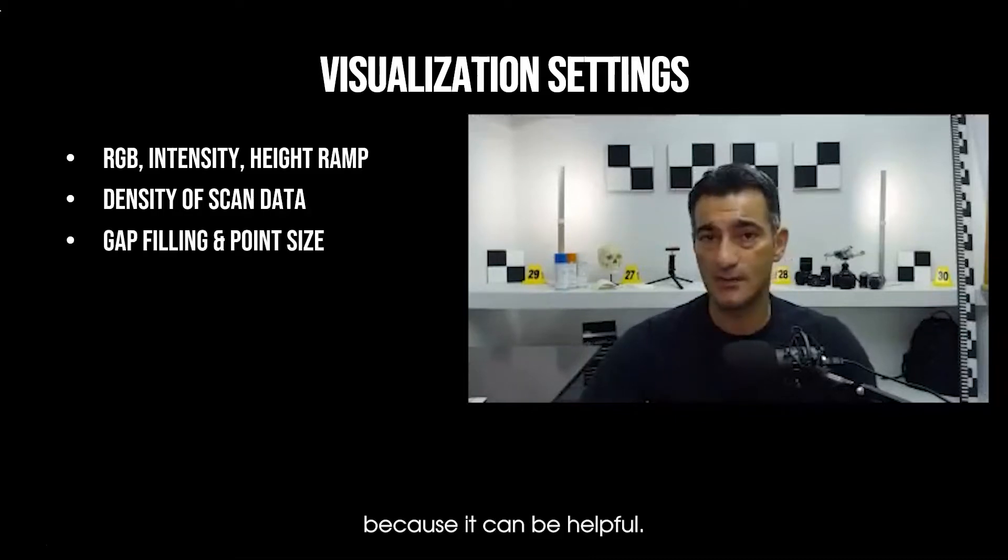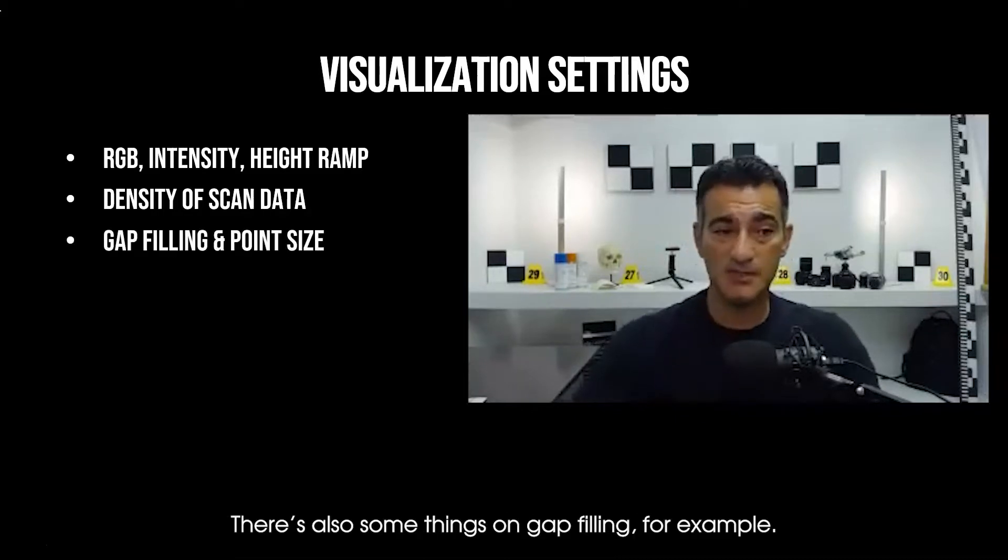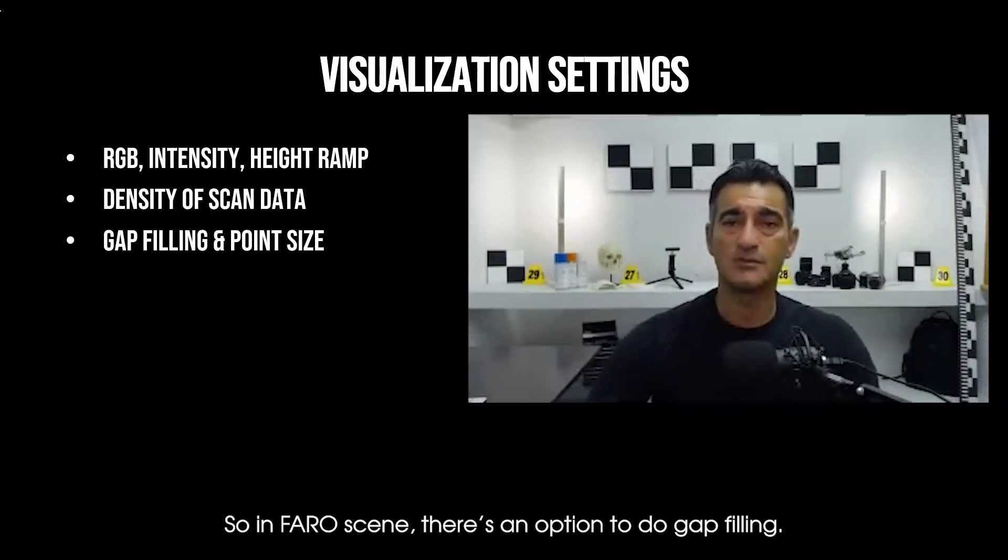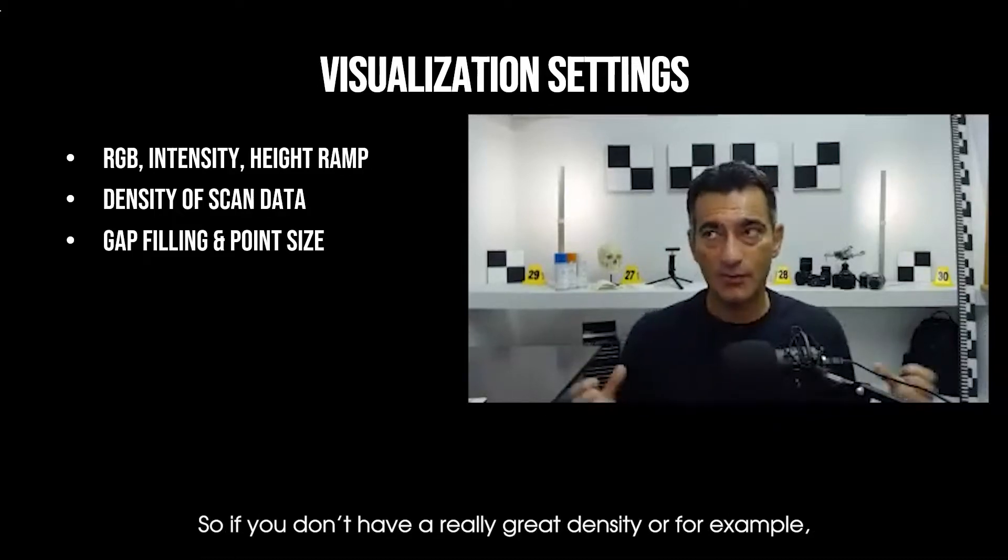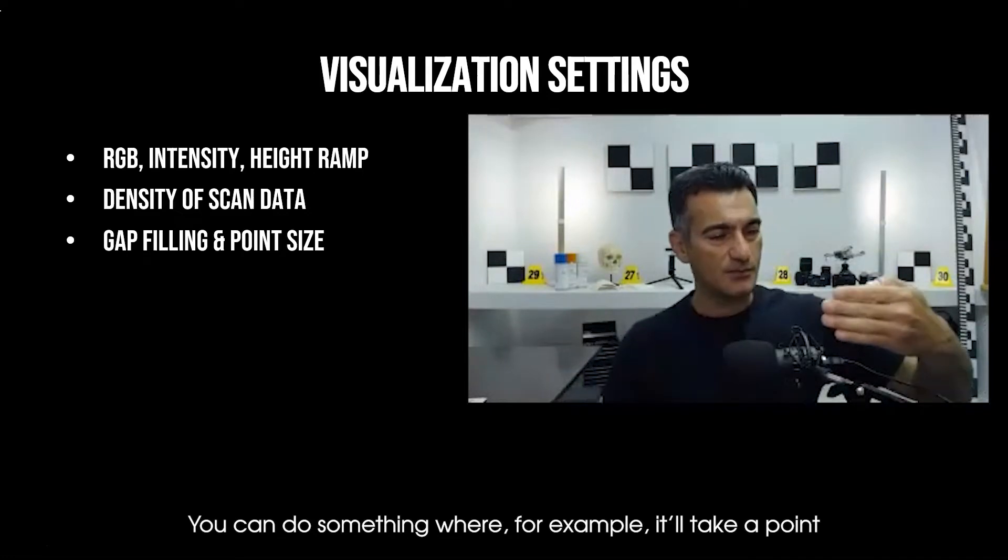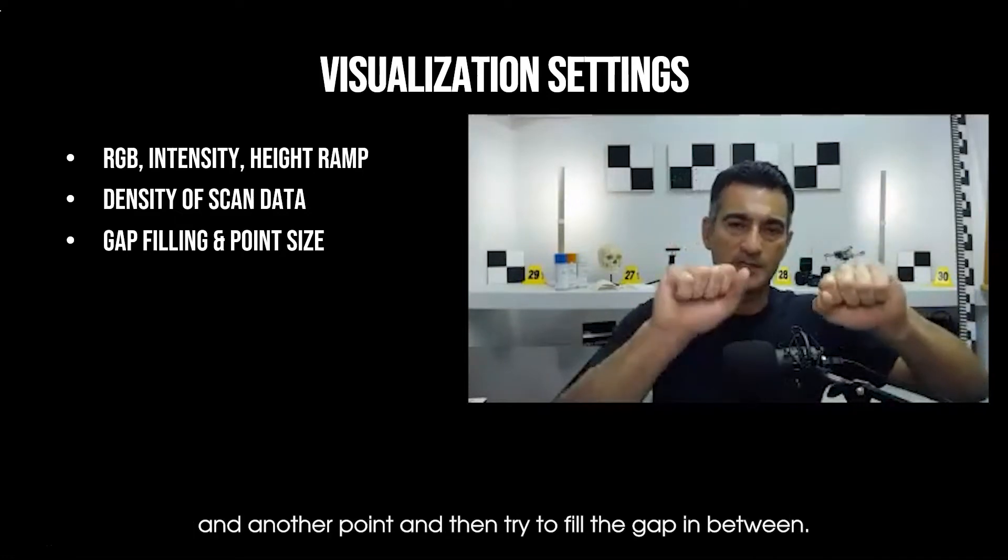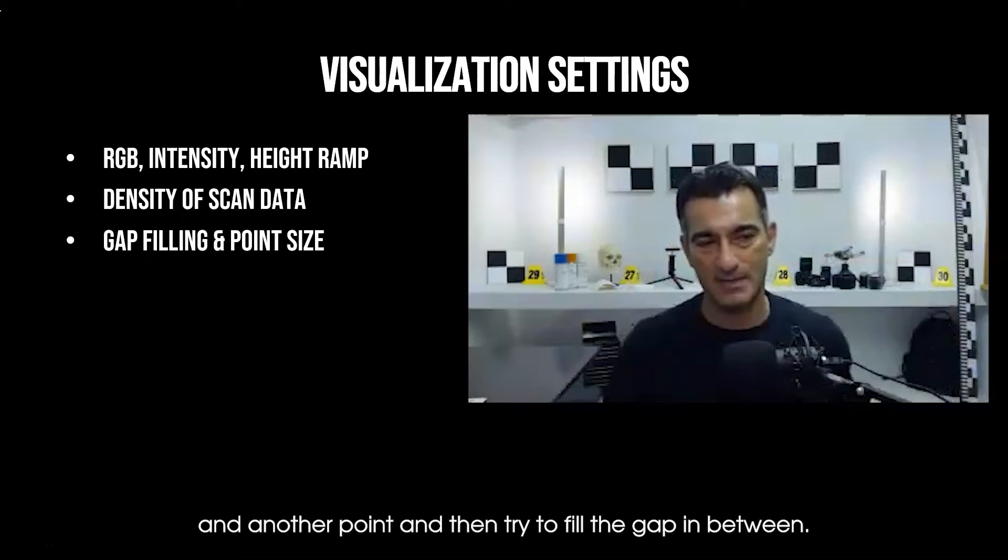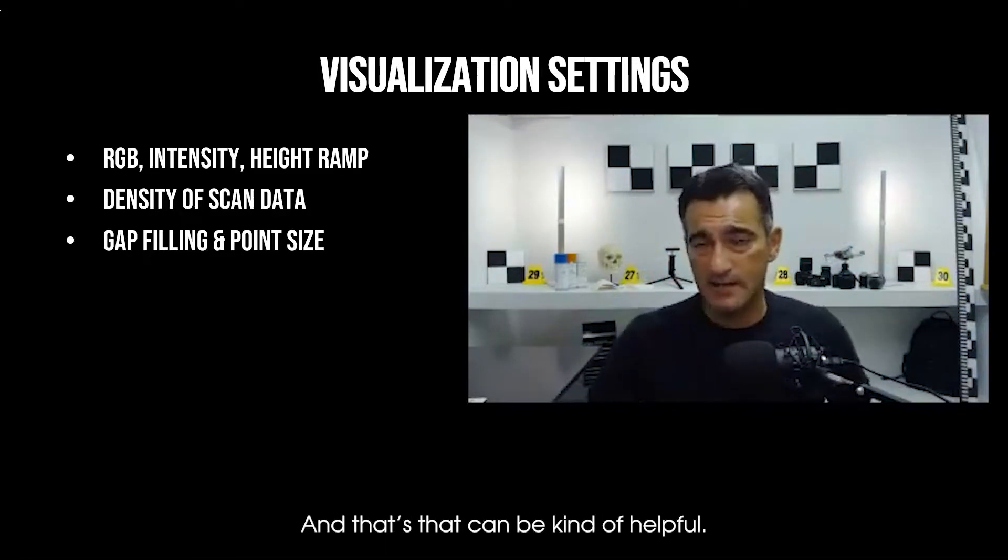There's also some things on gap filling. In FaroScene there's an option to do gap filling, so if you don't have a really great density or you've sub-sampled the point cloud and reduced the total number of points, you can do something where it'll take a point and another point and then try to fill the gap in between. That can be kind of helpful.